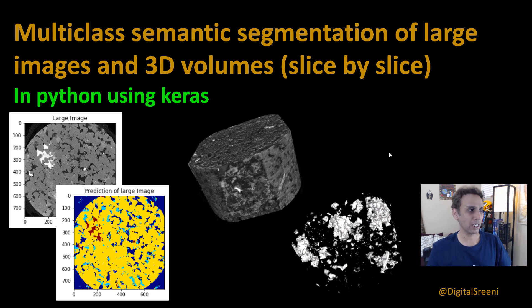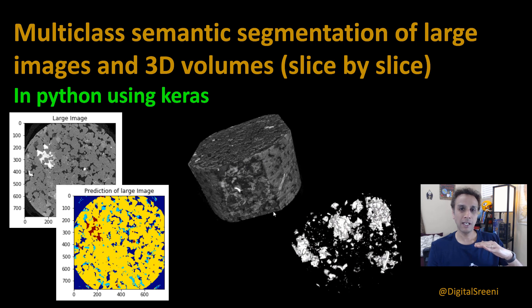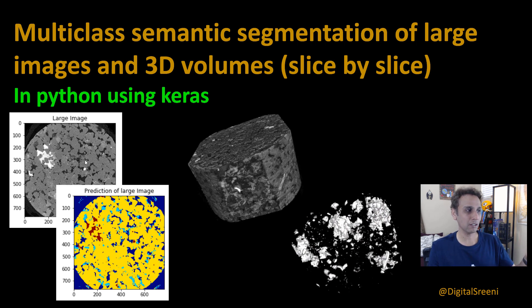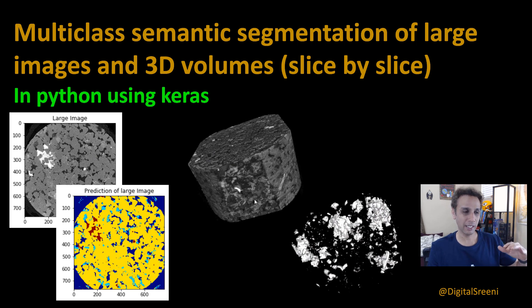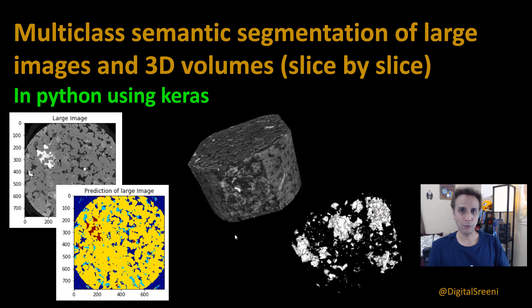In a 3D volume - if you look at this example, I have a large volume divided into multiple slices. I took each slice, which is a large image, divided them into smaller patches of 128 by 128, applied the trained model, stitched them back together, and did the same for each slice, stacking everything together so we end up with a segmented volume. It's much easier than it sounds.